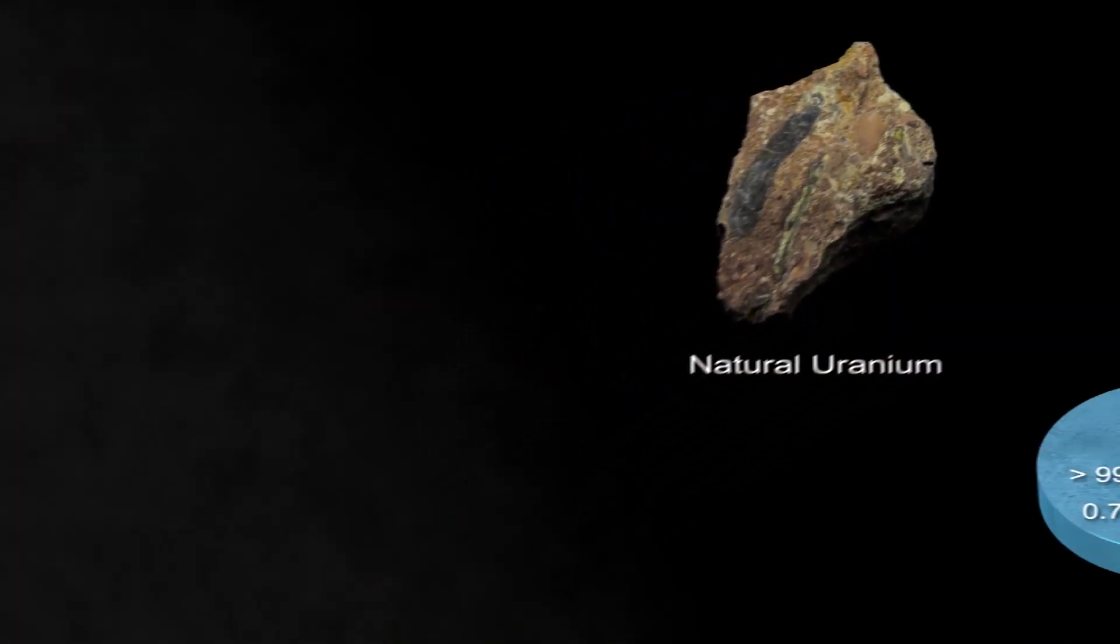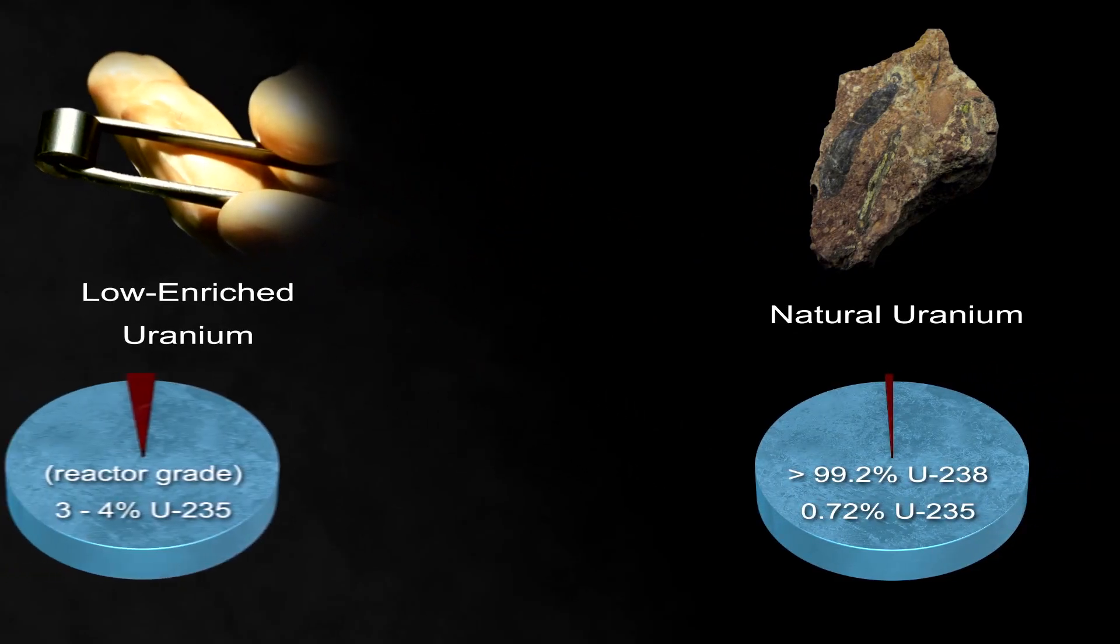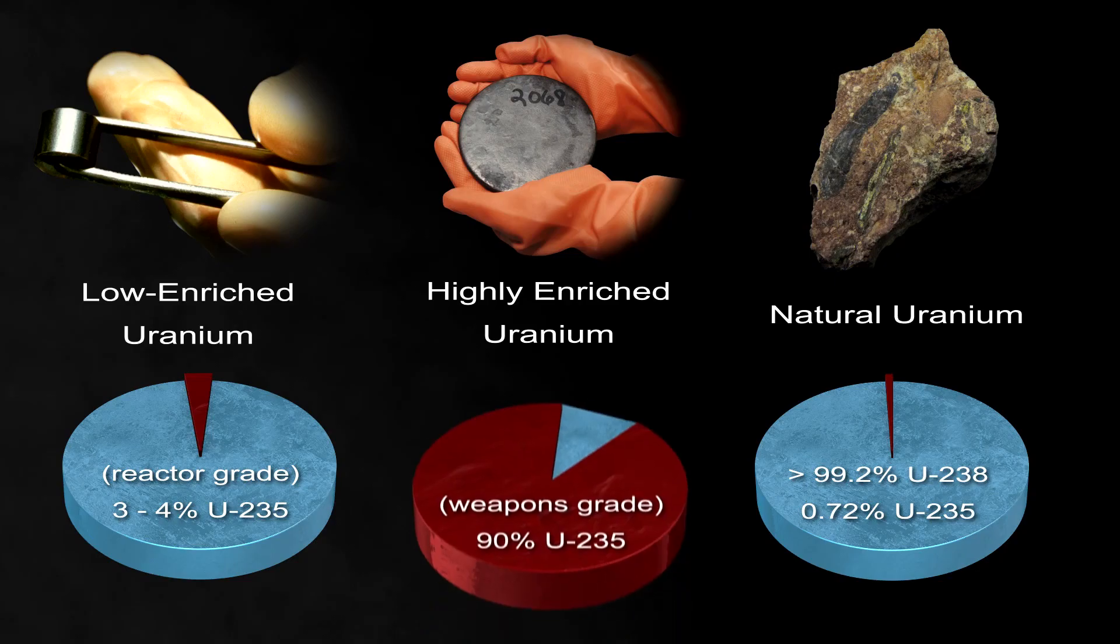For example, it may be possible to fuel modern NTP systems with low-enriched uranium, instead of highly enriched uranium.